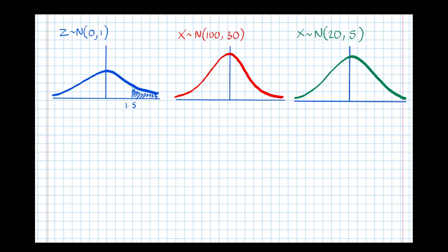The reason for that is the standard deviation is 1, and the square root of 1 is 1, so 1.5 standard deviations from the mean is just 1.5.